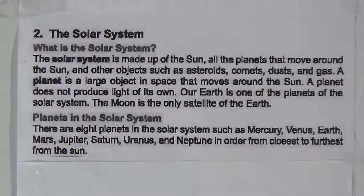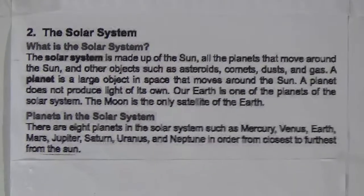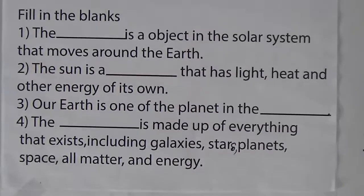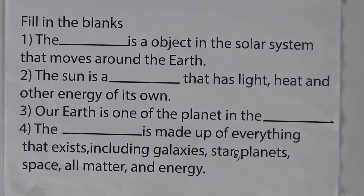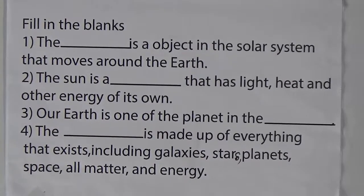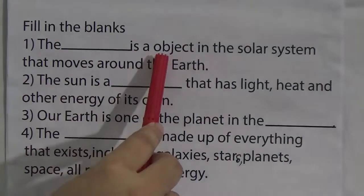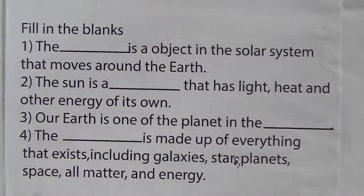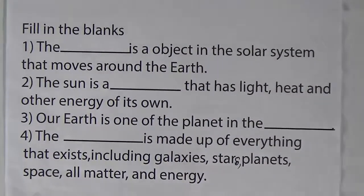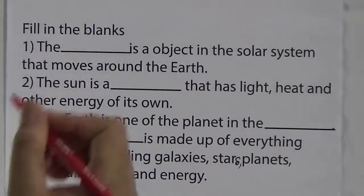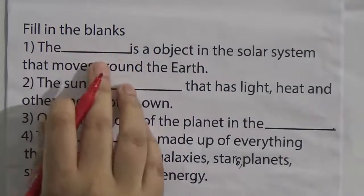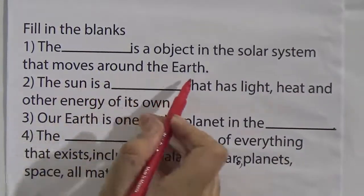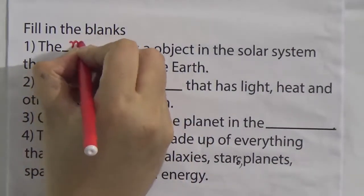We have already discussed this part in our previous class. Now we will do some exercises. First we will do fill in the blanks. Number one: the blank is an object in the solar system that moves around the Earth. The answer is the moon. The moon is an object in the solar system that moves around the Earth. So we will write 'moon' here.